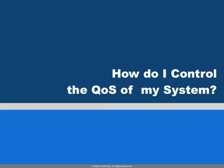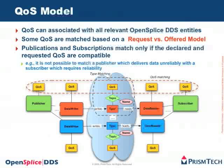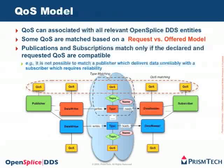Moving next — how can we control the quality of service in our system? DDS has a very powerful QoS model based on a set of QoS policies. For those QoS that control properties that have an end-to-end impact, DDS relies on the request versus offered model. In this case, subscriptions are not only matched because of their type but also because of QoS end-to-end, so that if there is a mismatch with respect to requested and offered QoS, a subscription cannot happen.